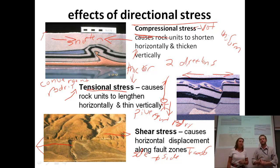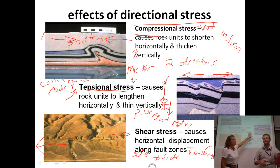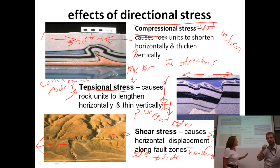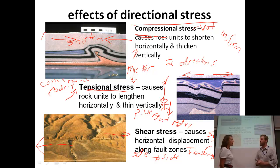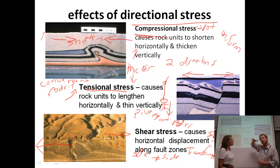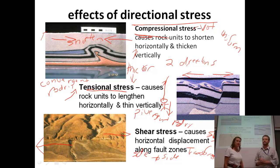One other thing to point out when we look at these three pictures: we have two different views. The top two pictures are what we call cross-sectional views — that means you're looking into the side of something, like looking at a profile. The bottom picture is a map view — think about flying in an airplane over this landscape and looking straight down. I like to think about it like a piece of cake: if you look at the side of a piece of cake you can see the layers, but if you look at it from above you would see all the writing on top.